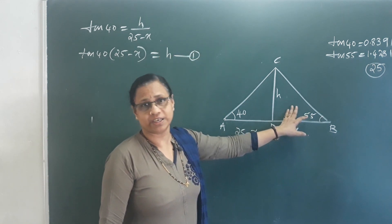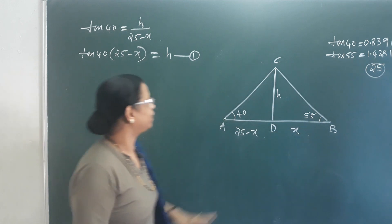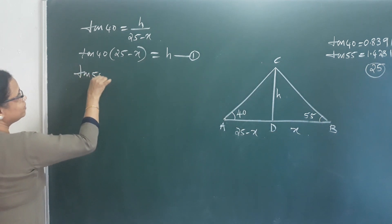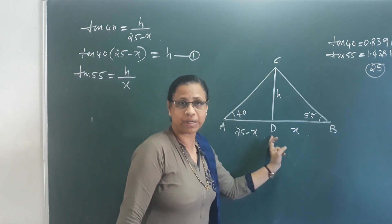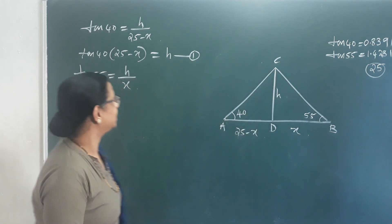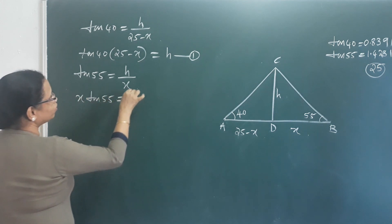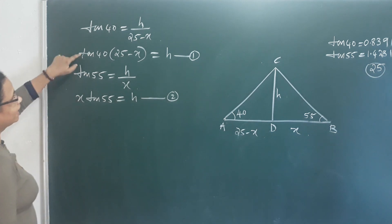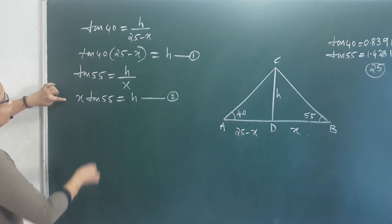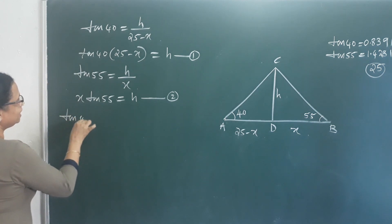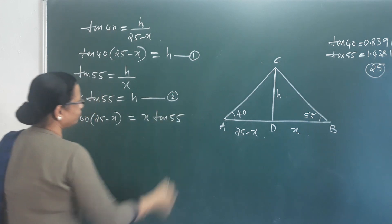Now consider triangle BCD. Let's take tan 55. Tan 55 is equal to opposite side by adjacent side: CD by BD, which is H by X. Cross multiplying: X into tan 55 is equal to H. That is Equation number 2. From equations 1 and 2, H equals H, so left-hand side equals left-hand side. Tan 40 into (25 minus X) is equal to X tan 55.